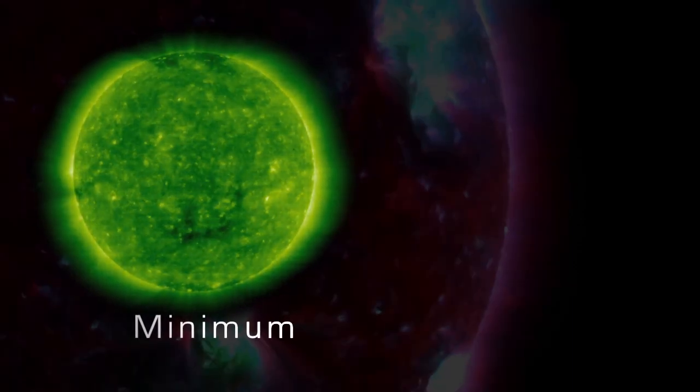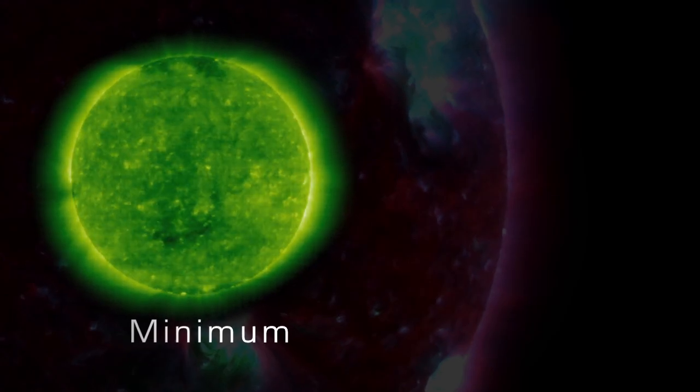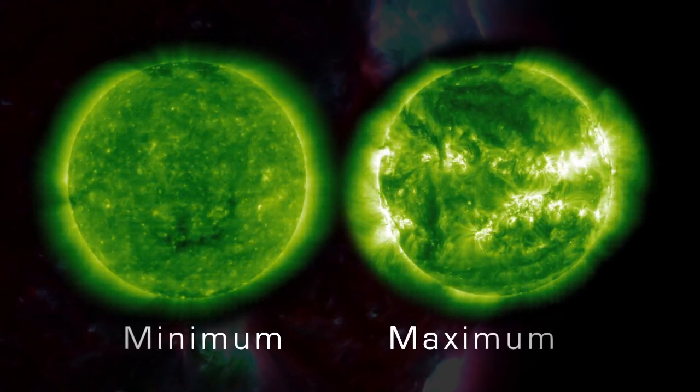Solar minimum represents a period of time when sunspot numbers are relatively low, and solar maximum represents a period when sunspot numbers are relatively high.